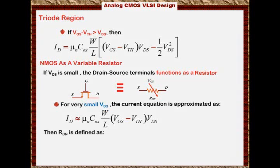So now we can define RON. What's RON? RON is basically VDS over ID. That's Ohm's law, right? The resistance from the drain to the source, if it's a resistor, the resistance from the drain to the source is VDS over ID. This is just a DC condition, right? So it can be small signal, it can be a DC condition.